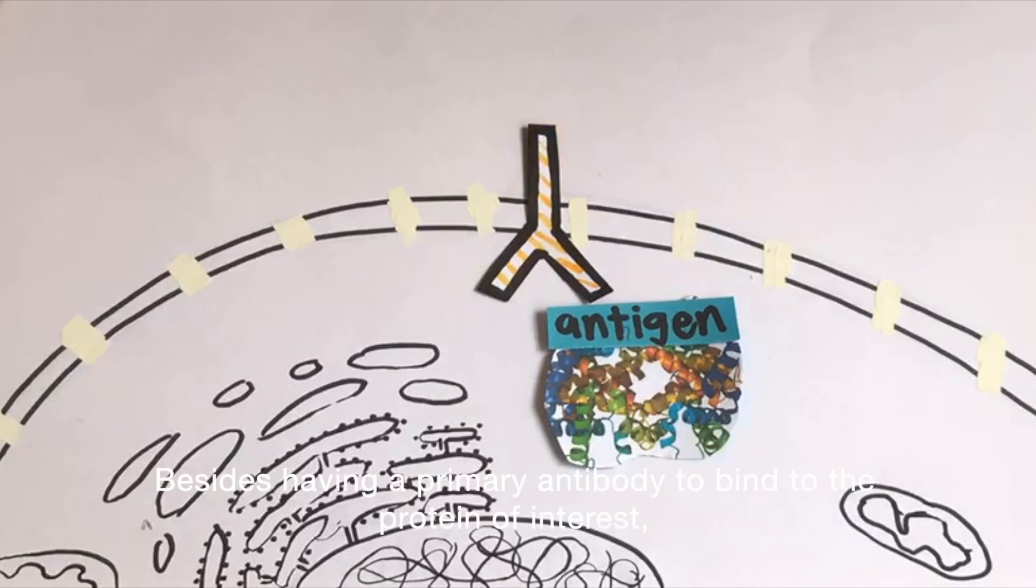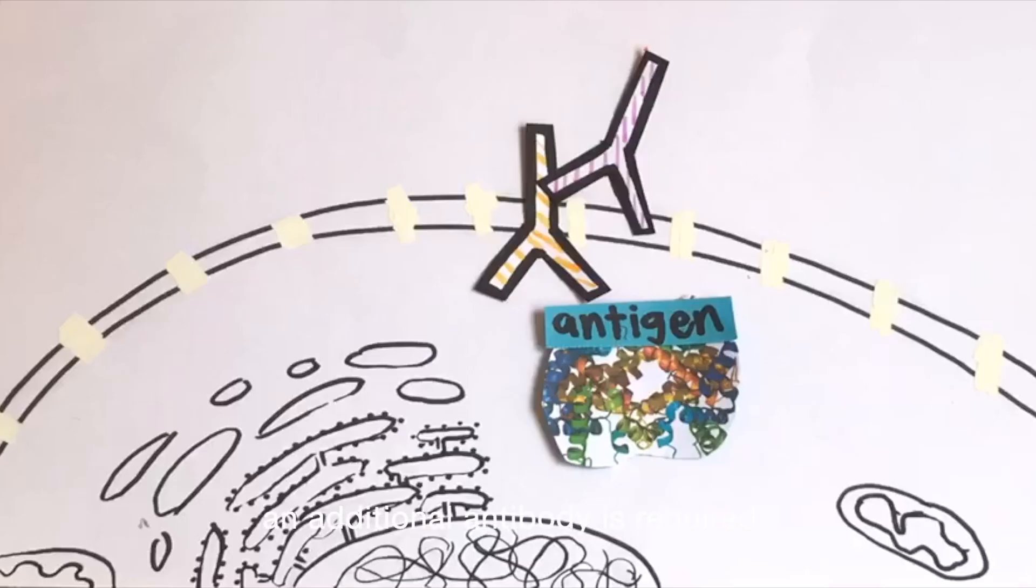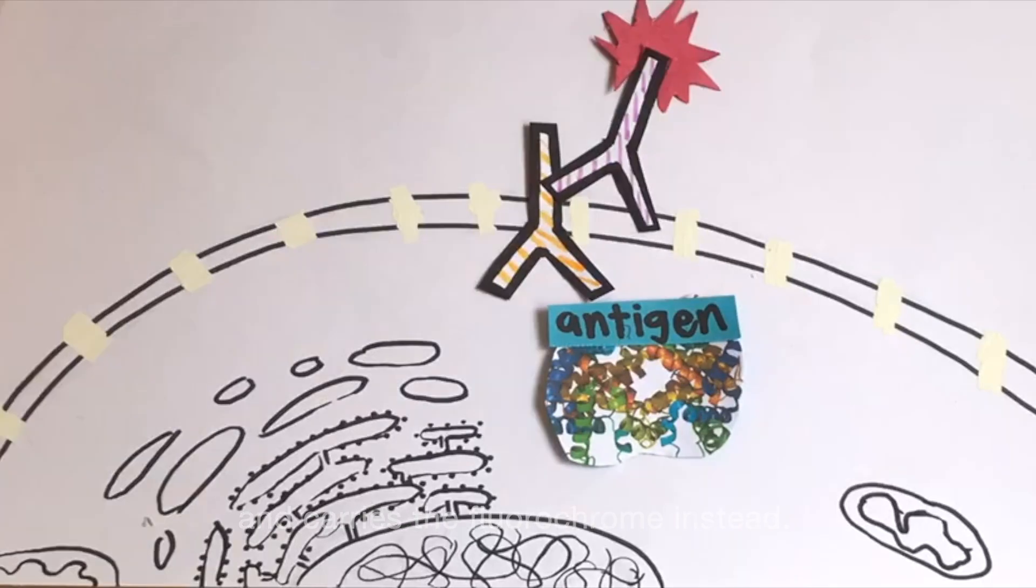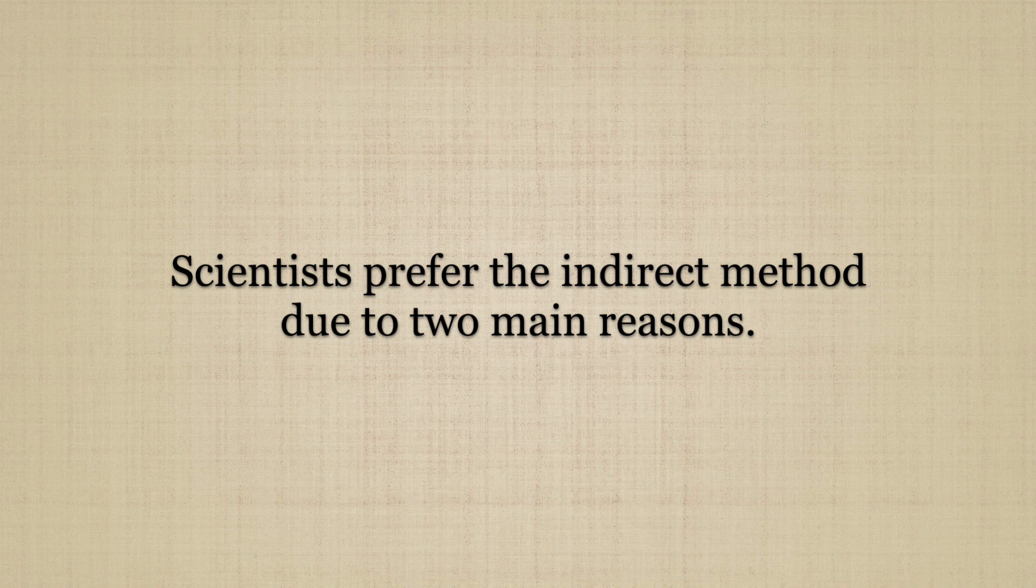Besides having a primary antibody to bind to the protein of interest, an additional antibody is required, called the secondary antibody. It binds to the epitope of the primary antibody and carries the fluorochrome instead. More often, scientists prefer the indirect method due to two main reasons.